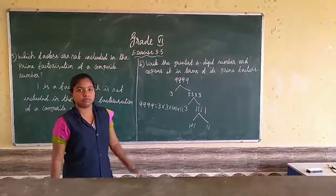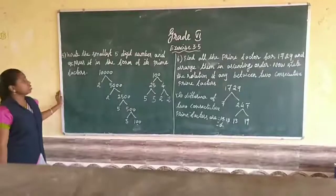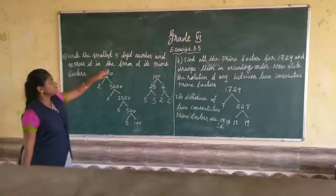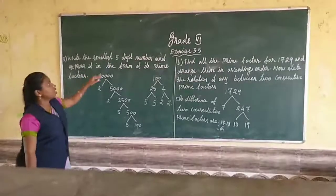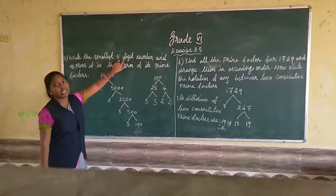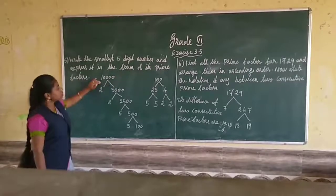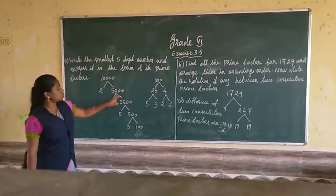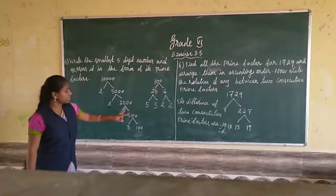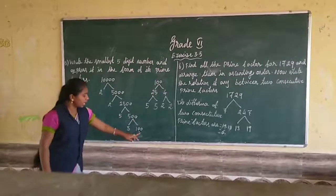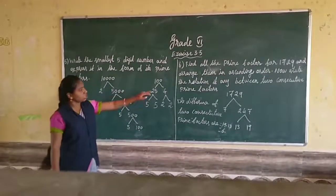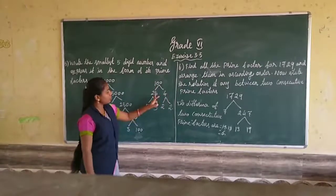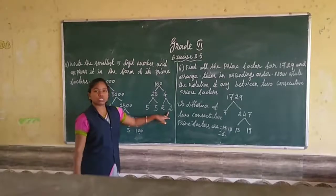Now the fifth sum: write the smallest five-digit number and express it in the form of its prime factorization. The smallest five-digit number is 10,000. We calculate it as 2 × 5,000, then 2 × 2,500, then 5 × 500, then 5 × 100, then 25 × 4. 25 splits as 5 × 5, and 4 splits as 2 × 2. So the prime factorization of 10,000 is 2⁴ × 5⁴.